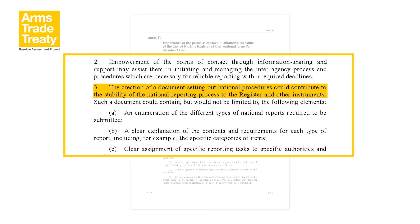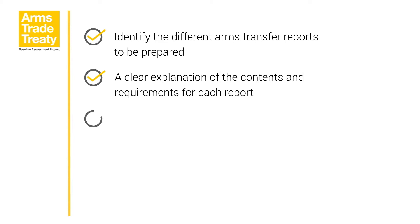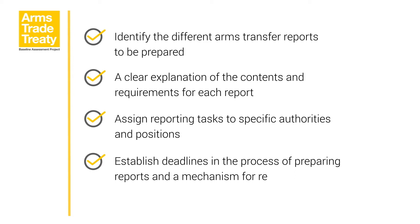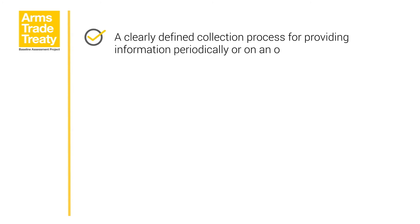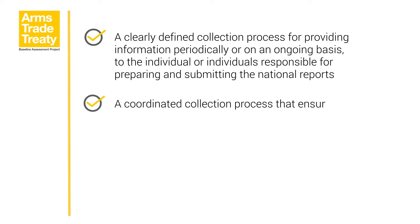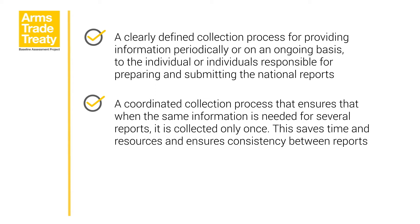The annex recommends the creation of a national procedures document to help ensure a stable and robust national process for preparing an annual report on arms exports and imports. Such procedures could include the following elements: identify the different arms transfer reports to be prepared; a clear explanation of the contents and requirements for each report; assign reporting tasks to specific authorities and positions; establish deadlines and a mechanism for reminding relevant information providers; a clearly defined collection process for providing information periodically or on an ongoing basis; a coordinated collection process that ensures the same information is collected only once, saving time and ensuring consistency between reports; and indicate if the data submitted is based on authorizations or actual transfers.